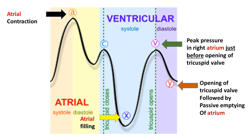Before explaining the waveforms of the jugular venous pulse, let me explain the activities of the atrium in real-time sequence. Starting from the phase of atrial contraction — also called the atrial kick — which is the last part of atrial systole. Following atrial contraction, there is no blood significantly present in the atrium. This phase of atrial contraction is followed by a phase of atrial filling.